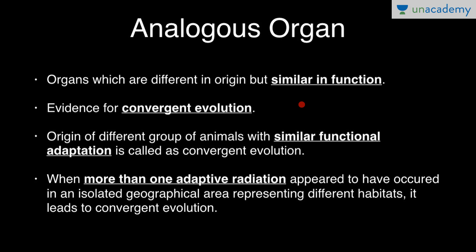Analogous organs show evolution without common ancestry and are evidence for convergent evolution. The origin of different groups of animals with similar functional adaptation is called convergent evolution. When more than one adaptive radiation occurs in isolated geographical areas representing different habitats, it leads to convergent evolution.